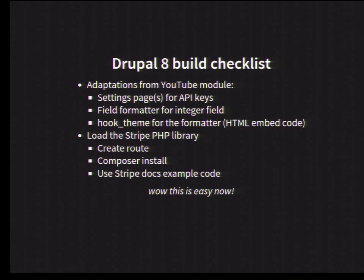Now we've got it narrowed down to a really simple list. We've got to make a settings page to put our API keys there. We need a field formatter to render that HTML embed code. We need a hook_theme implemented to actually put that embed code on the screen. Then when the token comes back from Stripe, we load the PHP library that Stripe provides — you can Composer-install it in the directory, or just download it. And we use the example code Stripe provides in their documentation. Now we've just got six steps.